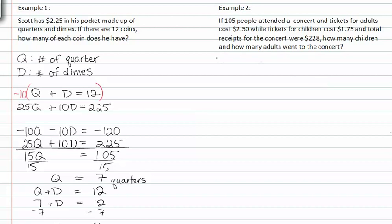In example two, we know that one hundred and five people attended a concert, and tickets for adults cost two dollars and fifty cents, while tickets for children cost one seventy-five. And total receipts for the concert were two hundred and twenty-eight dollars. We know there were children and adults. C is going to represent the number of children at the concert, and A is going to represent the number of adults at the concert. Since we know that the number of adults plus the number of children equals the total number of people attended, which they said was one hundred five, we can write this equation.